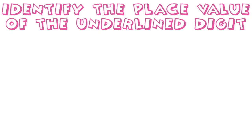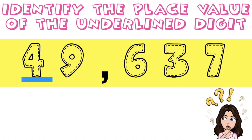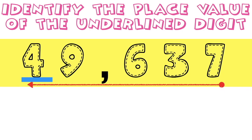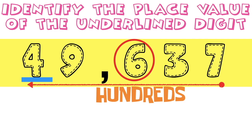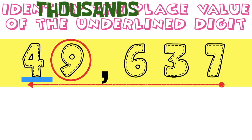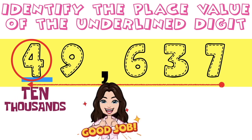How about if we have 49,637? Let's identify the place value of digit 4. Again, children, in identifying the place value, you are going to start from the rightmost digit going to the leftmost digit. Digit 7 is ones, digit 3 is tens, digit 6 is hundreds, digit 9 is thousands. And finally, digit 4 is... ten thousands! Good job!